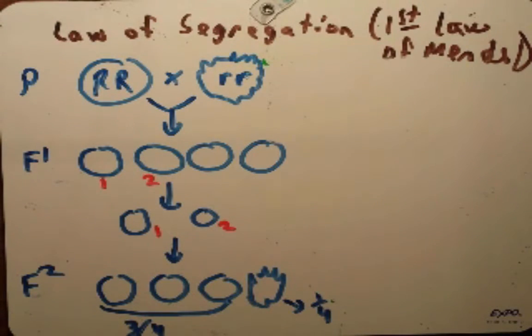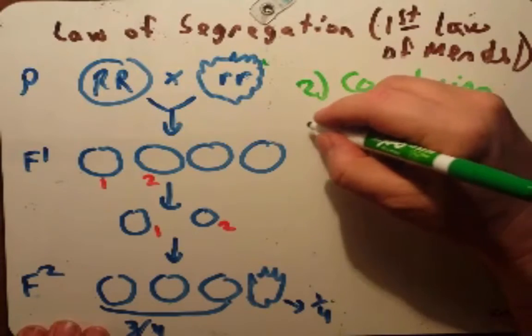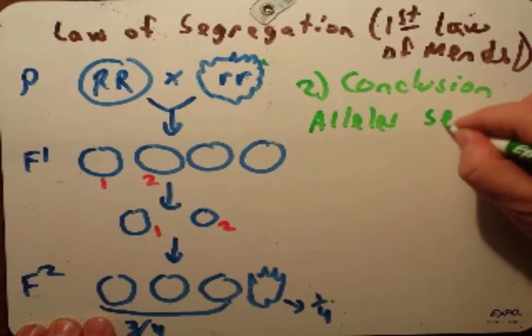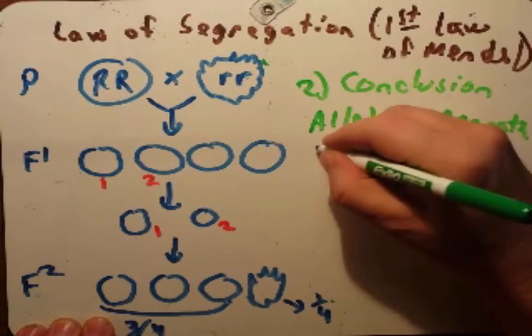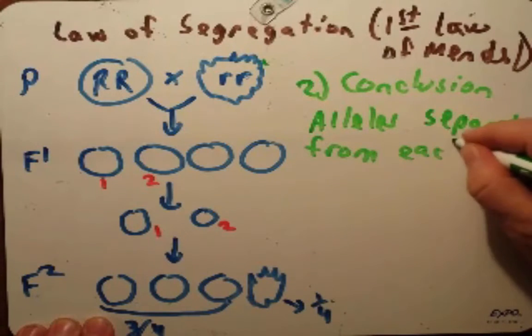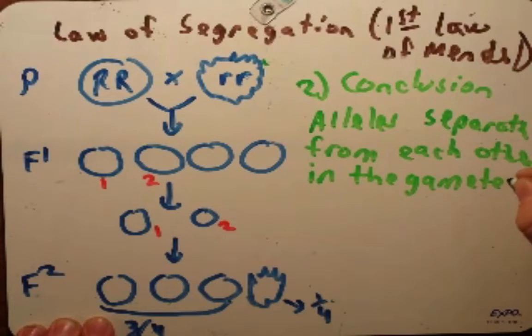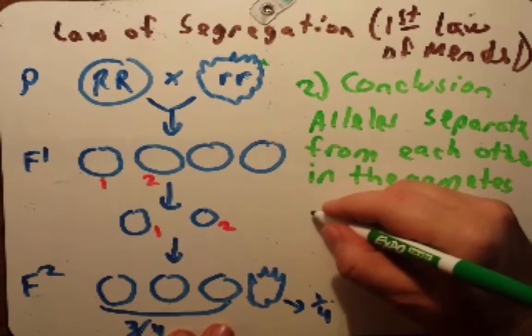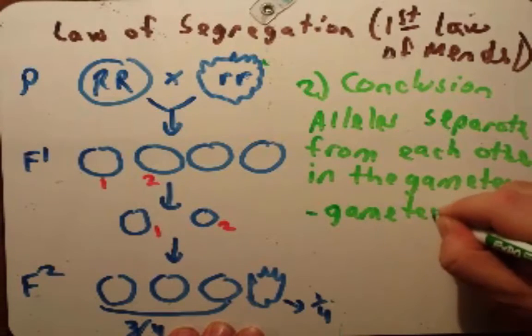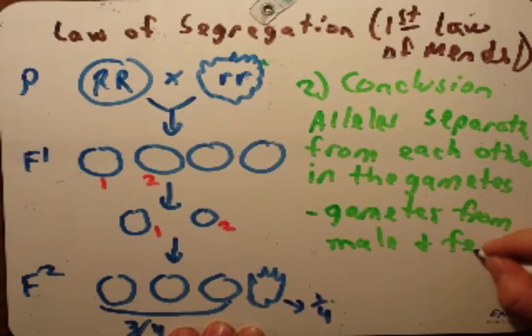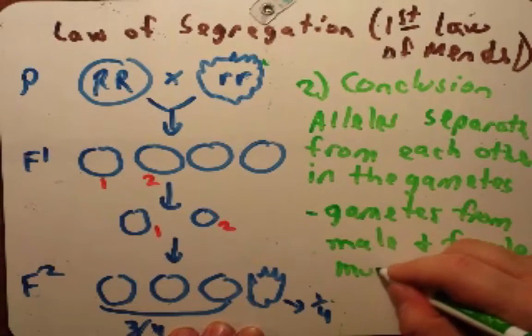These observations also led to a second conclusion. That was that the alleles present in one parent must separate from each other in the gametes. We now know Mendel was right on target here. These alleles, both allele copies, must separate from each other during gamete production.